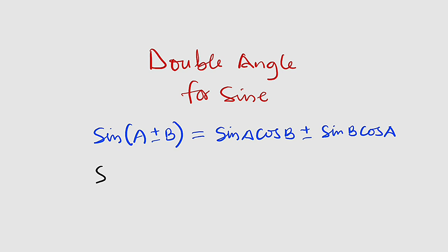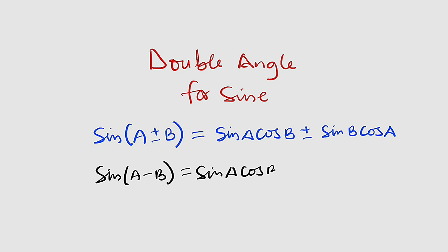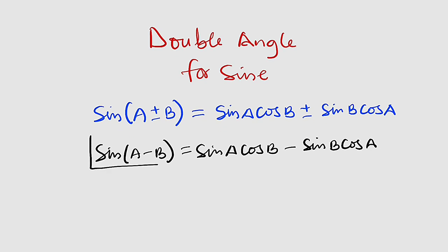So sine of A minus B is the same thing as sine of A multiplied by cosine of B, minus sine of B multiplied by cosine of A. That is very important — let me box it.